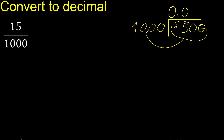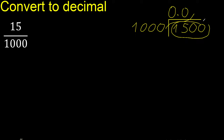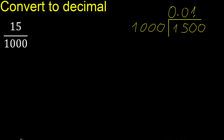1500 is not less, therefore find which number: 1000 multiplied by which number is nearest to 1500 but not greater? Multiplied by 2 is 2000 — that is greater. Therefore multiplied by 1 is 1000.